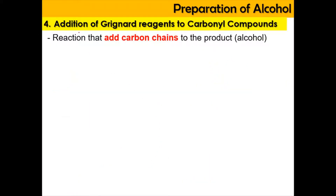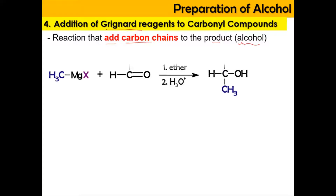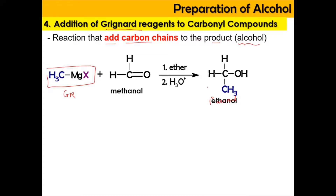For method number 4, we can use the addition of Grignard reagent to a carbonyl compound. This method is going to add carbon chain to the product, which is an alcohol. For example, if we have a Grignard reagent reacted with methanal, we're going to produce a primary alcohol — specifically ethanol — plus a byproduct of MgOHX. The CH₃ group is inserted and the double bond O becomes OH, giving a primary alcohol because the carbon bearing OH is attached to only one alkyl group.